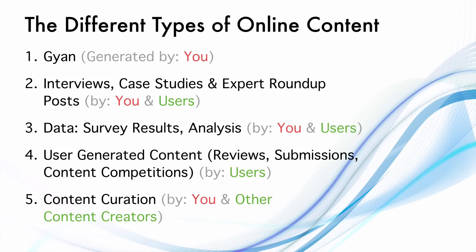The fifth type is content curation, where you organize the best content from around the web and present it to your audience. Very little content is created by you here; the rest is created by other content creators. These types of online content can also be delivered in different formats.